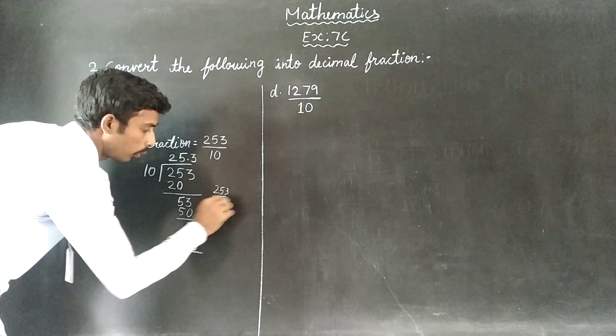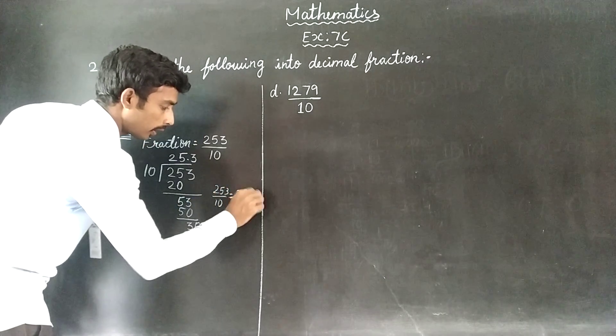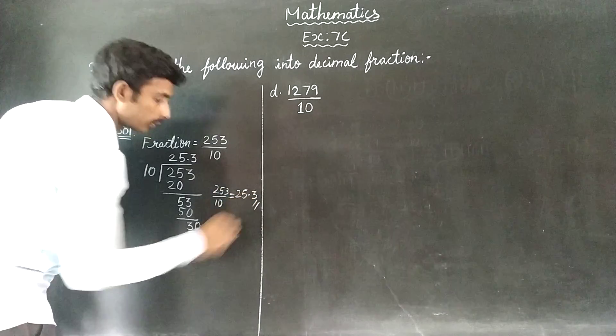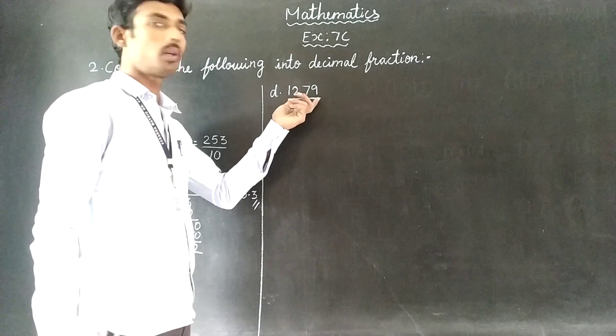First, 253 by 10 equals 25.3. Look at the decimal platform. The decimal platform. Now the second one is 1279 by 10.